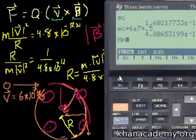Times the magnitude of the velocity squared. What was the velocity? It was 6 times 10 to the 7th meters per second. So times 6 times 10 to the 7th meters per second squared, right? Because I have to take that.